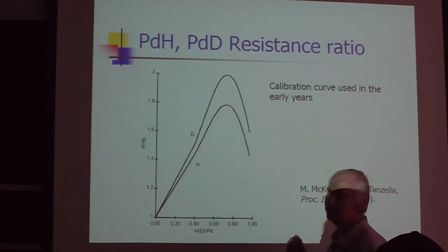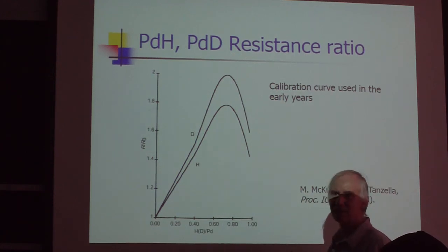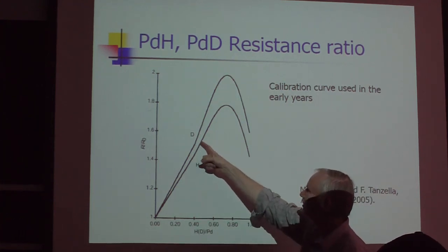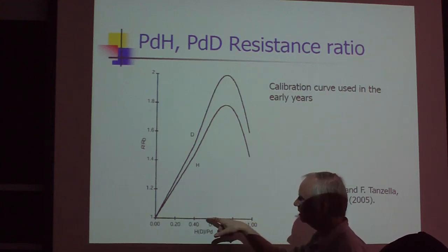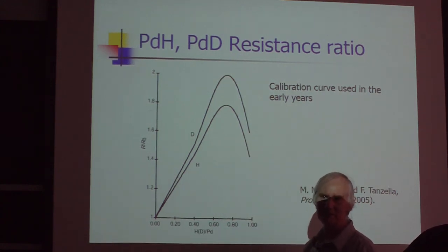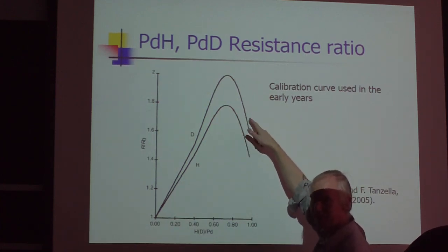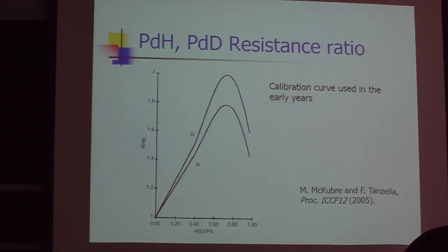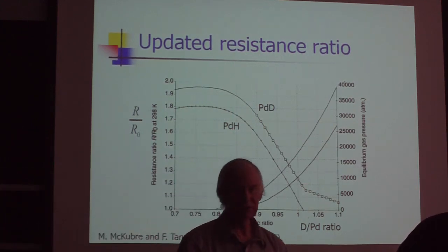In the case of deuterium, it gives a factor of two increase in resistance. For hydrogen, a bit less but substantial. How do you use this curve? If you measure a resistance ratio, there are two possible loadings. But between here and here is the miscibility gap, not easy to load. You go up the curve very fast but can't easily come back down. And these curves are used to figure out the loading.